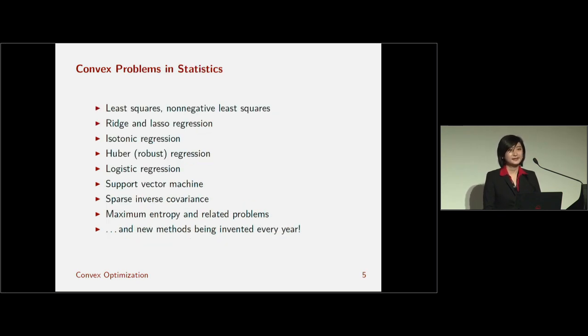So here you'll see some statistical problems that are convex. You probably see least squares and non-negative least squares, ridge and lasso regression, or elastic net from Glmnet. Isotonic regression, Huber robust regression, logistic regression, support vector machines, sparse inverse covariance estimation, which we'll see an example of in detail later. Maximum entropy estimation and related problems, as well as many new methods being invented every year at conferences like these.